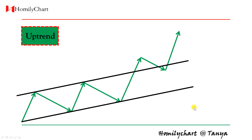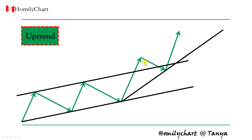We need to recreate the ascending channel. How to create? Same. First step, draw an uptrend line — we connect two new lows, this low and this low, to get an uptrend line first. Then, at this high point, we draw a parallel line of this line. This is a new ascending channel.